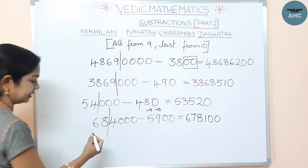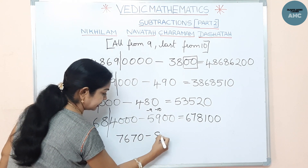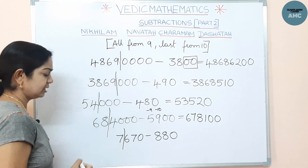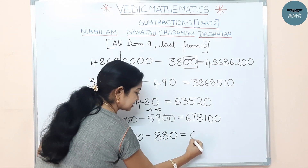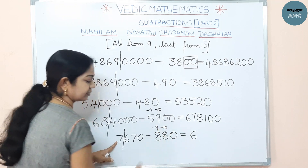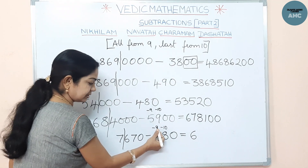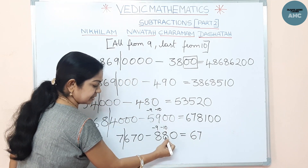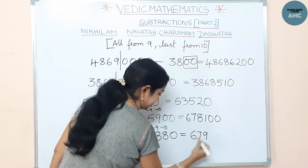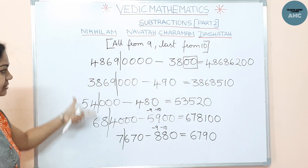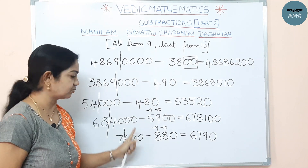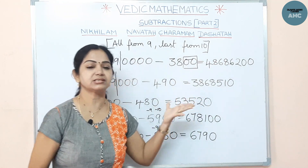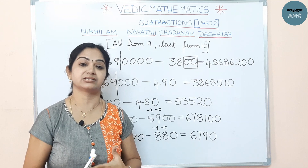Another example: 7,670 minus 880. Make a partition of three digits from the back. Reduce the first part by one: 7 becomes 6. Apply Nikhilam to the number part only, ignoring the zero. 9-8=1, and 1 is added to the existing digit 7 giving 8. Then 10-8=2, added to 7 giving 9. The zero is carried over. Any multiple of 10 can be subtracted in split seconds using this method.